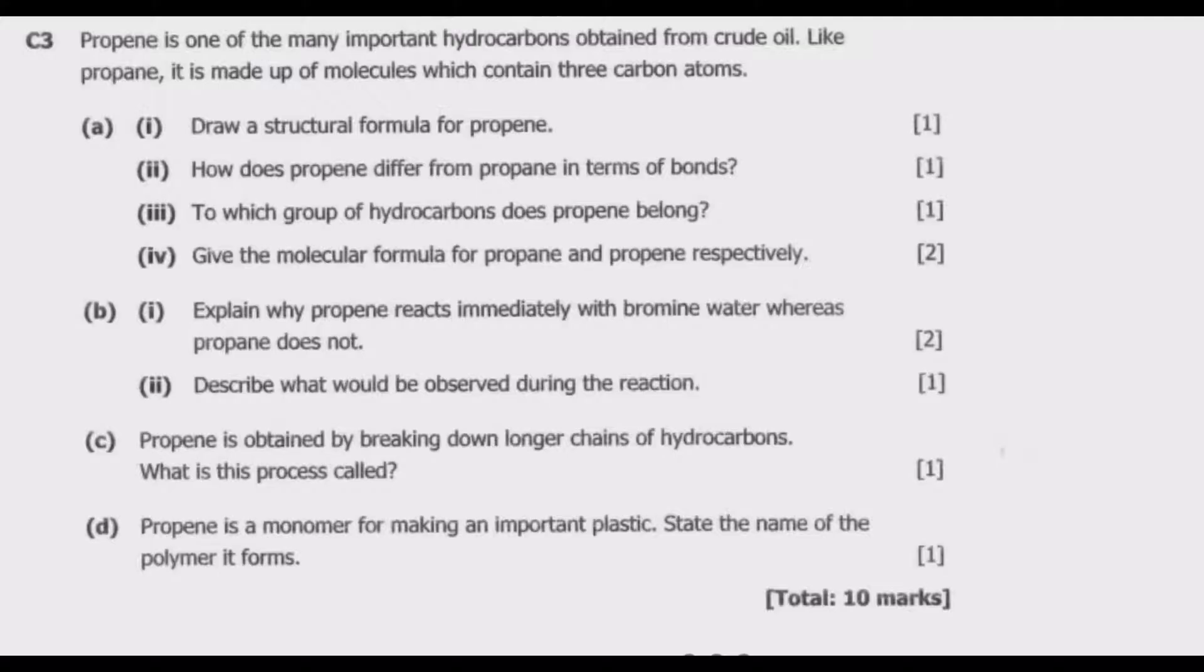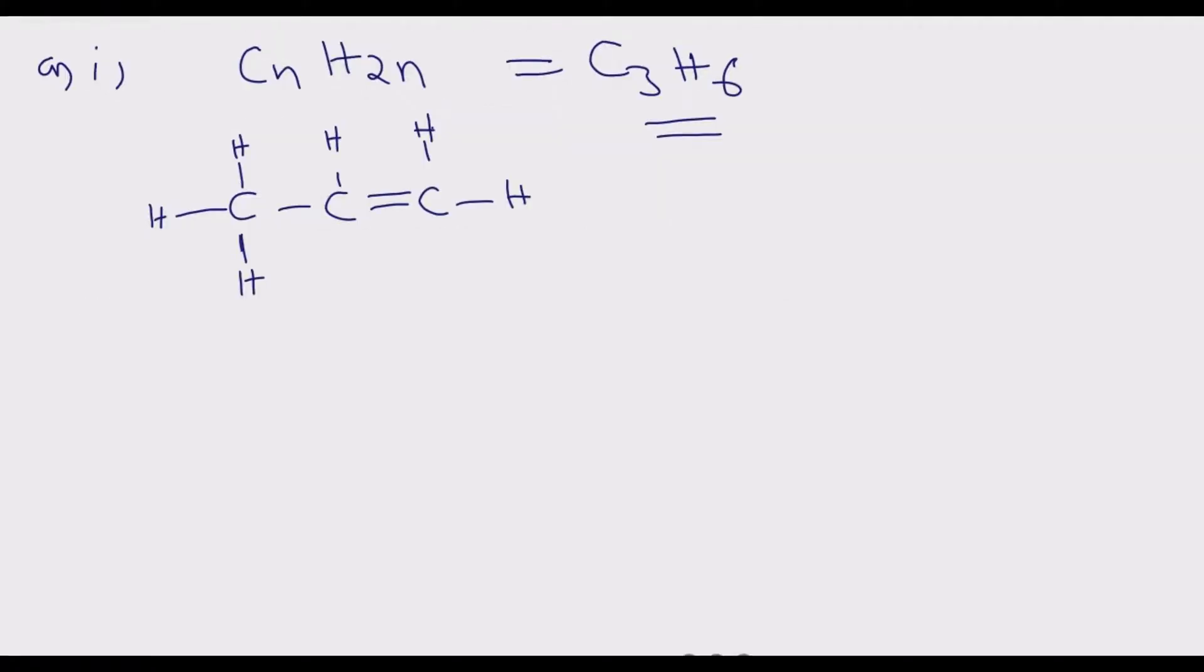Question (a)(ii): How does propene differ from propane in terms of bonds? If we draw the structural formula of these two, propane follows the generic formula CₙH₂ₙ₊₂, so the formula itself instead of having six hydrogens is going to have eight.